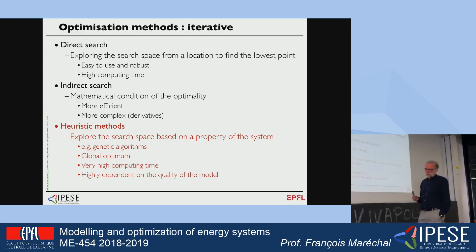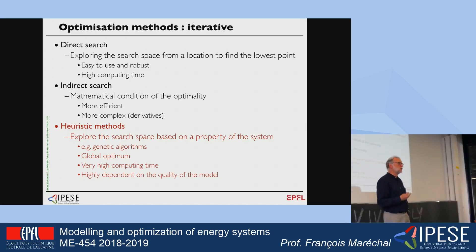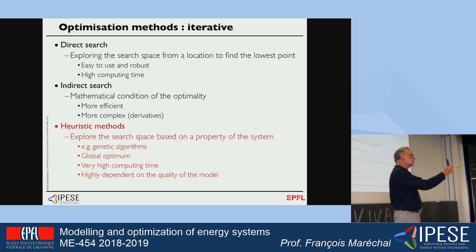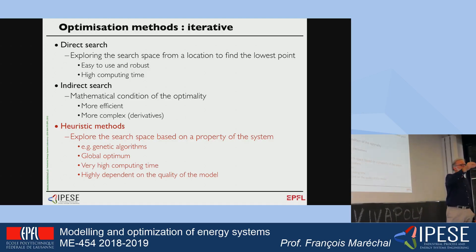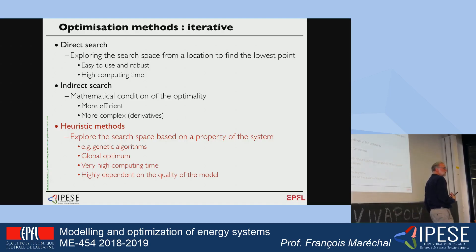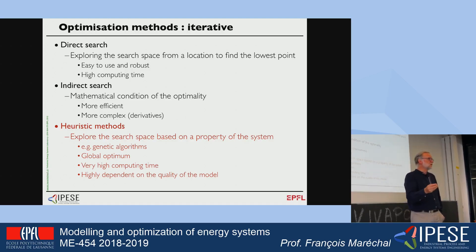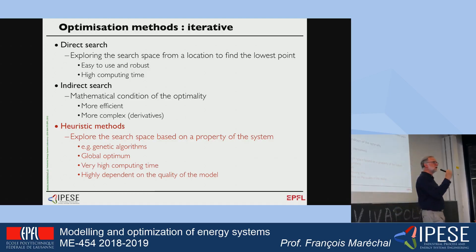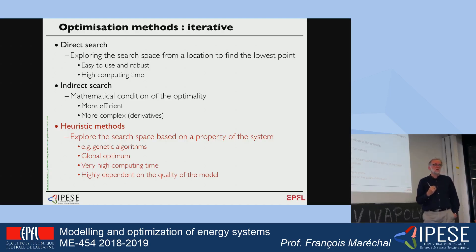When solving optimization problems, there are three types of methods. The direct search starts from one point and goes down step by step to reach an optimum by looking at the decrease of the objective function. The indirect search looks at the conditions of the optimum where the derivative is equal to zero — these methods are also iterative, finding where the optimum conditions are satisfied.